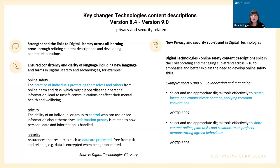Another change from version 8.4 to version 9 is that we have a new privacy and security substrand in digital technologies, and also a new core concept of privacy and security that fits very much with our contemporary world. Additionally, some of the content descriptions have been split in half — in version 8.4, some content descriptions had two things happening, often joined by the word 'and.' In version 9, those have been split into two separate content descriptions so each thing is represented individually. Same amount of content, but two content descriptions.